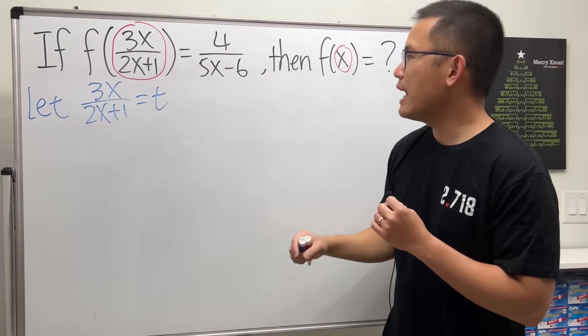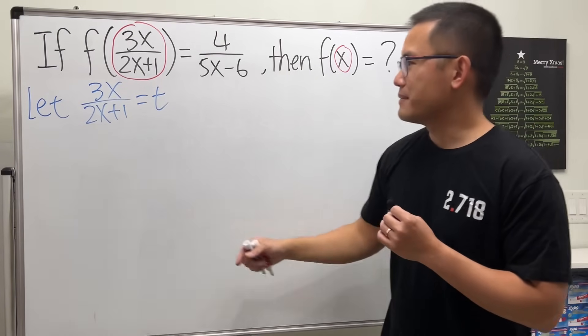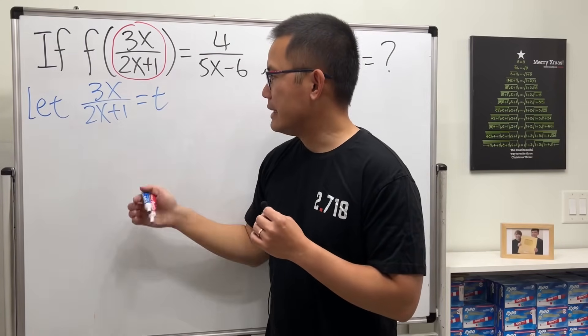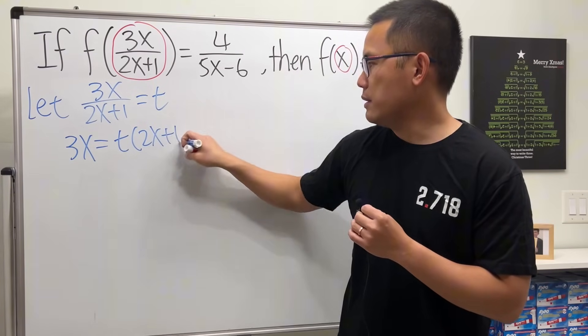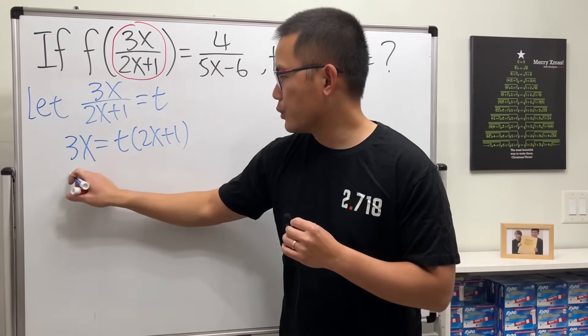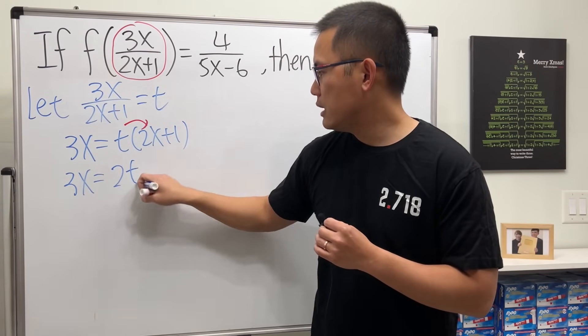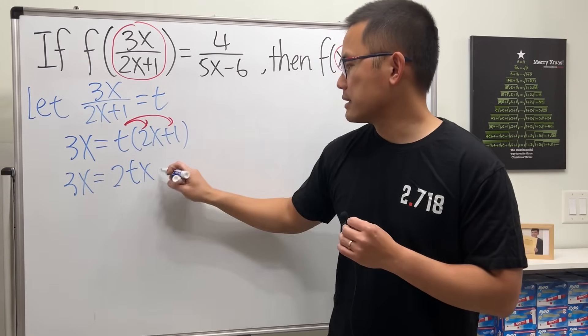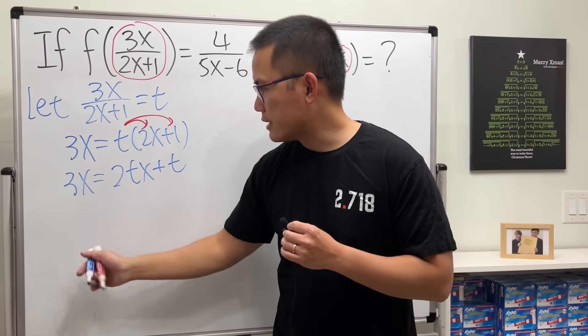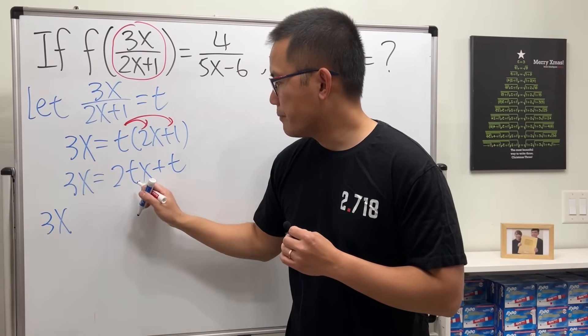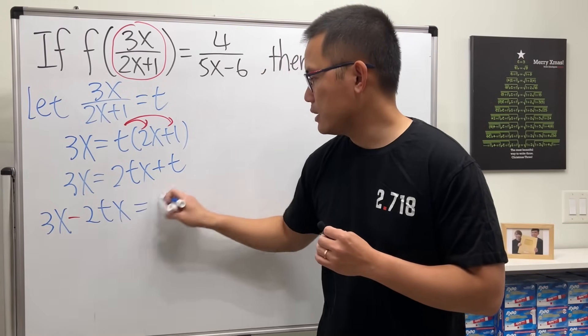We'll just end up with the answer that we want. So I'm going to multiply the denominator to both sides first. 3x equals t times 2x plus 1. Distribute, so we have 3x equals 2tx plus t. Then I'm going to move this term to the other side so that all the x's will be together. That will be minus 2tx and that's equal to t.